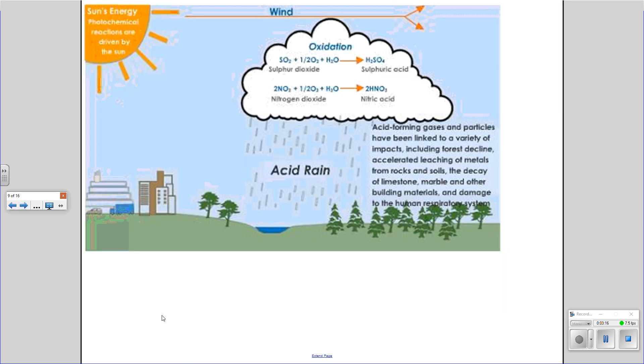For example, if you had sulfur dioxide in combination with water, you get sulfuric acid. Or nitrogen dioxide in combination with water, you get nitric acid. So sulfuric acid and nitric acid are what we call our secondary pollutants, and they're also known as forms of acid rain.